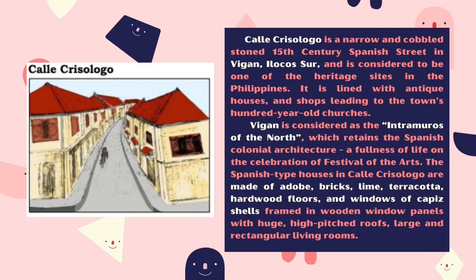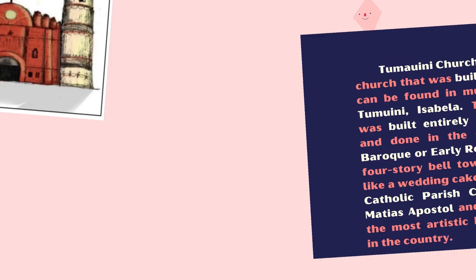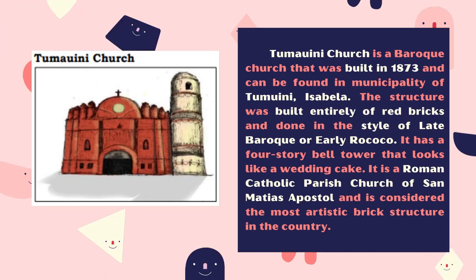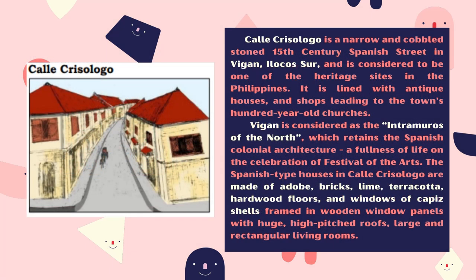Calle Crisologo is a narrow cobblestone 15th-century Spanish street in Vigan, Ilocos Sur, and is considered to be one of the heritage sites in the Philippines. It is lined with antique houses and shops leading to the town's hundred-year-old churches. Vigan is considered as the Intramuros of the North, which retains the Spanish colonial architecture and a fullness of life in the celebration of the festival of the arts. The Spanish-type houses and Calle Crisologo are made of adobe, bricks, lime, terracotta, hardwood floors, and windows of capiz shells framed in wooden window panels with huge high-pitched roofs and large rectangular living rooms.